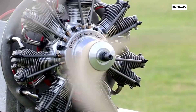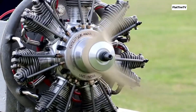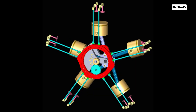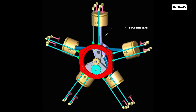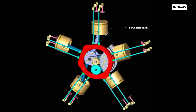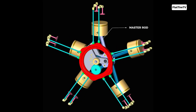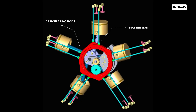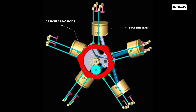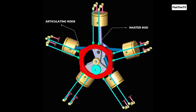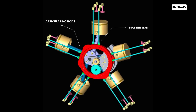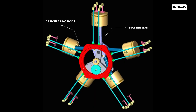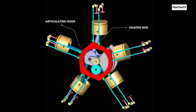The heart of its operation lies in an ingenious connecting rod system. Only one of the rods, called the master rod, connects directly to the crankshaft. The rods from the remaining cylinders, known as articulating rods, attach to the master rod, allowing all pistons to contribute to the rotation of the single shaft.